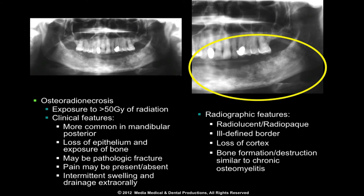Osteoradionecrosis is a specific inflammatory condition of bone that may occur following exposure to therapeutic doses of radiation. It is characterized by hypoxic tissue that has a diminished capacity for normal repair. This tissue and its overlying mucosa may break down, leading to superficial infection of the denuded bone. The disease may be asymptomatic early. When ulceration of the surface mucosa occurs, tenderness and pain are common symptoms.